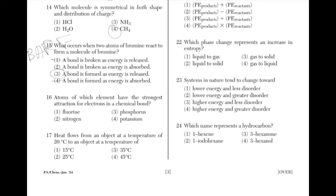Atoms of which element have the strongest attraction for electrons in a chemical bond? Fluorine will have the greatest attraction because it has 7 electrons in its outer shell, so it wants one more electron to complete its outer shell.